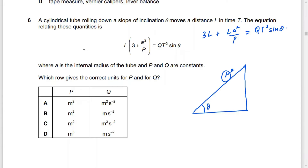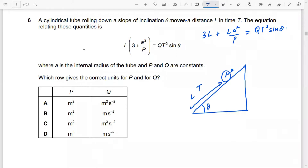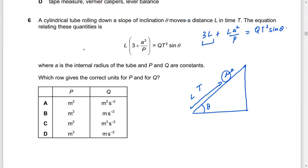We can expand this as 3L + LA²/P = QT² sinθ. Since this is a correct equation, it is a homogeneous equation. So the units of each term on the left-hand side are equal to the units of the right-hand side term.